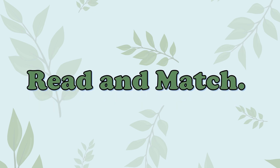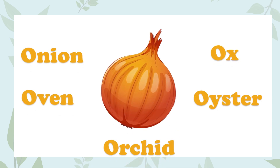Let's play this game. Read and match. Let's begin with this one. What picture do you see? Is it an onion, an oven, orchid, ox, or oyster? Correct, it's an onion.